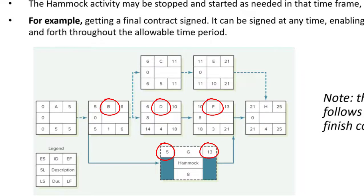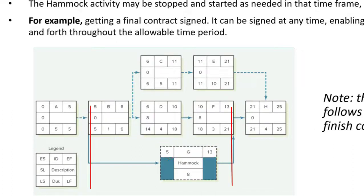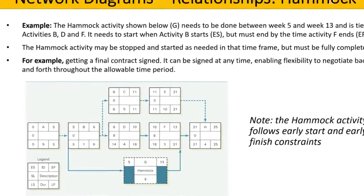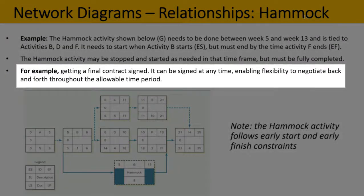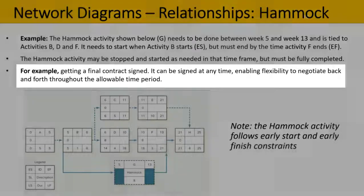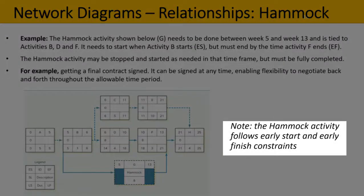The hammock activity needs to start when activity B starts — the early start — but must end by the time activity F ends, the early finish. The hammock activity may be stopped and started as needed in that time frame, but it must be fully completed by the end of activity F. For example, getting a final contract signed: it can be signed at any time, enabling flexibility to negotiate back and forth throughout the allowable period, but by the time that period is over, the contract must be signed. The hammock activity follows early start and early finish constraints.